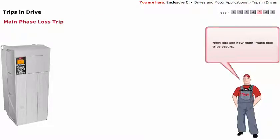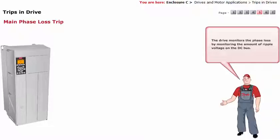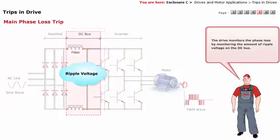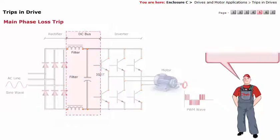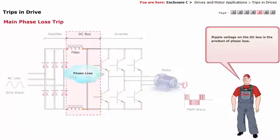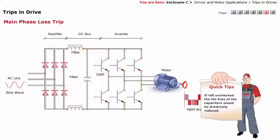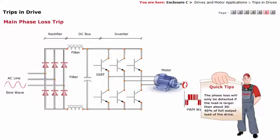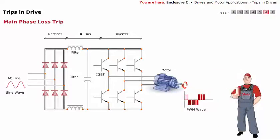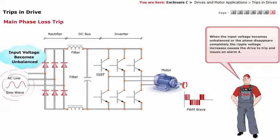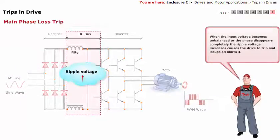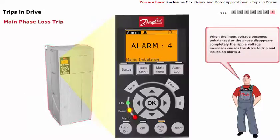Next, let's see how main phase loss trips occur. The drive monitors phase loss by monitoring the amount of ripple voltage on the DC bus. Ripple voltage on the DC bus is the product of phase loss. The ripple voltage causes overheating in the DC bus capacitors and the DC coils. If left unchecked, the lifetime of the capacitors would be drastically reduced. The phase loss will only be detected if the load is larger than about 30 to 40% of full output load of the drive. When the input voltage becomes unbalanced or the phase disappears completely, the ripple voltage increases, causing the drive to trip and issue an alarm.